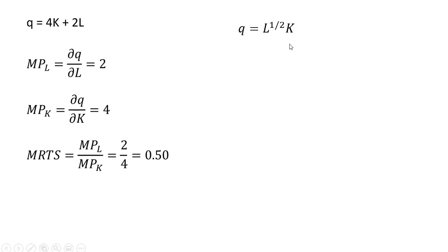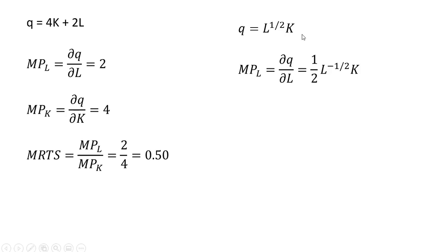Example 2: we have this production function. We're going to get the marginal product of labor. This 1/2 in the exponent comes down in front, so 1/2 times L. Then on this exponent we're going to take 1/2 minus 1, leaving us with L raised to the minus 1/2 power. We don't have to do anything with the k term. For the marginal product of capital, the partial derivative of k is just 1, and since that 1 is being multiplied by L to the 1/2, we retain the L to the 1/2 power.